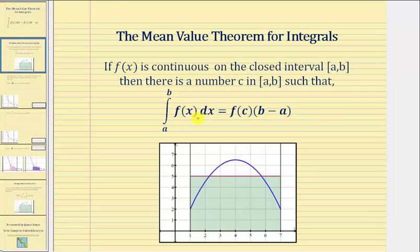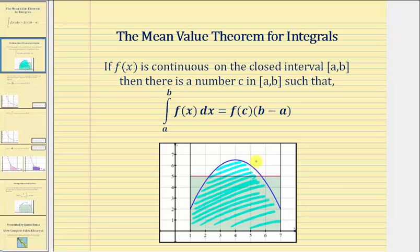If f of x is non-negative over the closed interval from a to b, the value of this definite integral gives us the area under the function over the interval. Let's assume this is a graph of f of x over the interval from one to seven. The value of the definite integral gives us this area here, and the mean value theorem tells us that value equals f of c — the height of some rectangle — times the quantity b minus a, the width of the interval, where the area of this rectangle equals the area under the function.